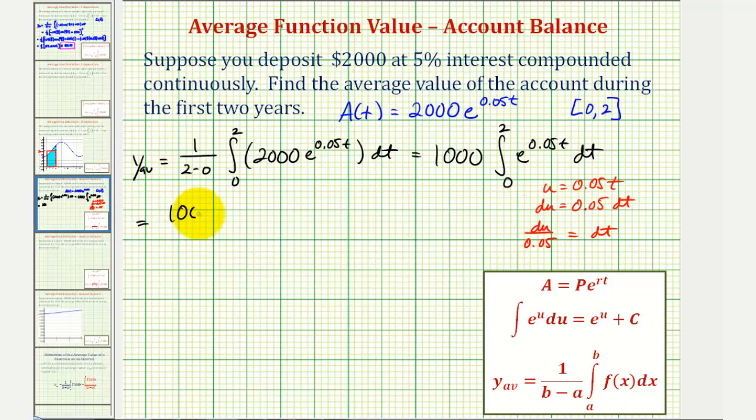So we would have 1,000 divided by 0.05 times e to the 0.05 times t. And now we'll evaluate this at t equals 2 and t equals 0 and then find the difference.